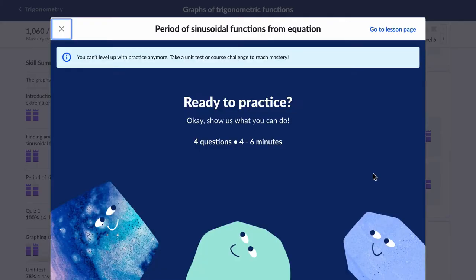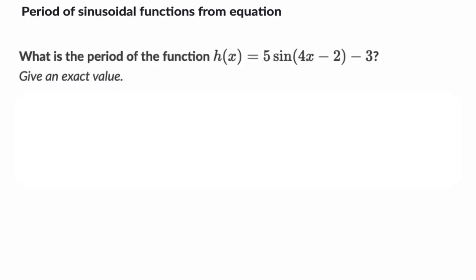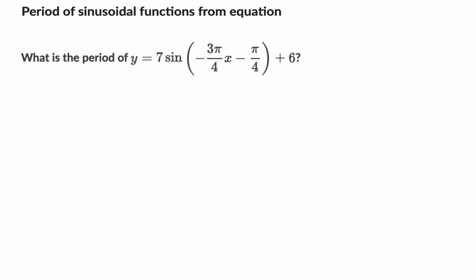So let's try a couple of these out. Look at the general structure of these equations and how to read the period. Let's do that. So I think I have a couple of four examples for you, and let's do the first one. y equals seven times the sine of negative three pi over four x minus pi over four plus six.